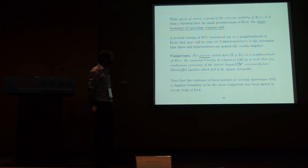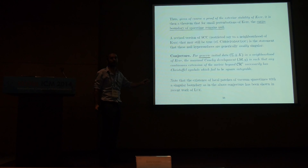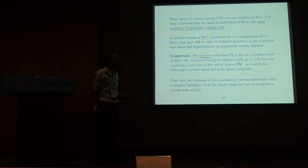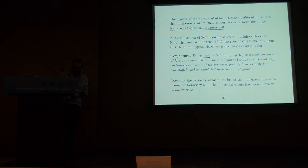There is a revised version of strong cosmic censorship — a weaker version that still may be true, due to Christodoulou. The conjecture says that you have this Cauchy horizon and you can extend the metric continuously, but you cannot extend so that the Christoffel symbols are square integrable. This would mean that at least you cannot extend this as a weak solution to the Einstein equations, and that would have physical significance. In some sense it's reasonable to make this conjecture, because the existence of local patches of spacetime with this property was proven in the breakthrough work of Jonathan Luk that actually led to this theorem. I'm very hopeful that this conjecture can be proven, and the first step would be to prove it in a neighborhood of Kerr. Thanks a lot.